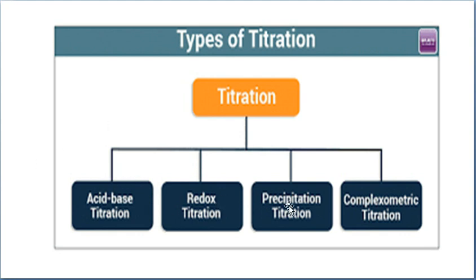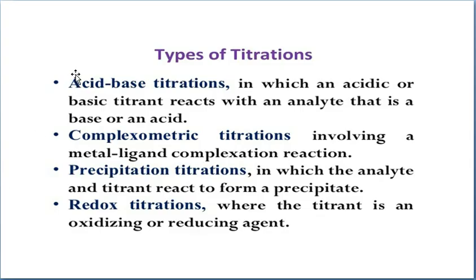There are four types of titrations used in volumetric analysis: acid-base titration, redox titration, precipitation titration, and complexometric titration. Acid-base titration involves an acid or a basic titrant reacting with an analyte that is a base or an acid. Complexometric titration involves the formation of a complex. In precipitation titration, the analyte and titrant react to form a precipitate. In redox titration, both oxidation and reduction undergo simultaneously.